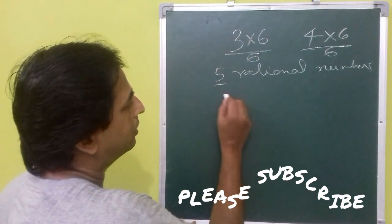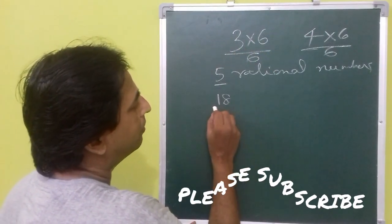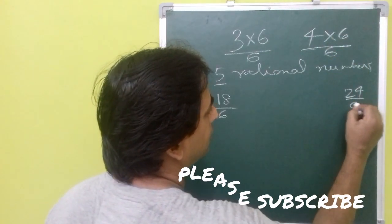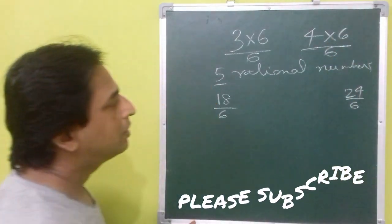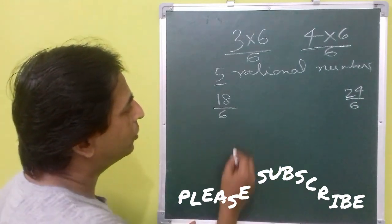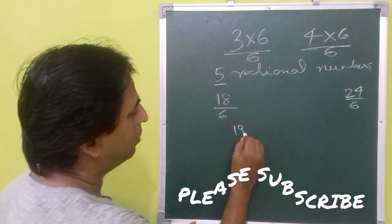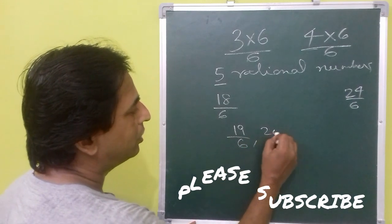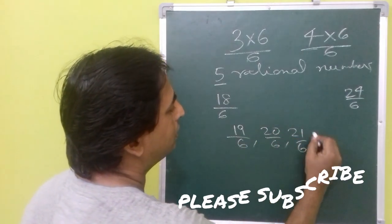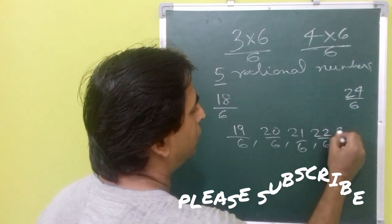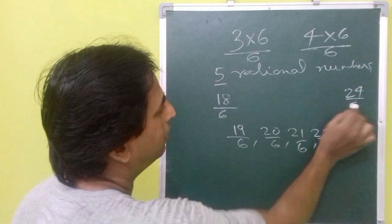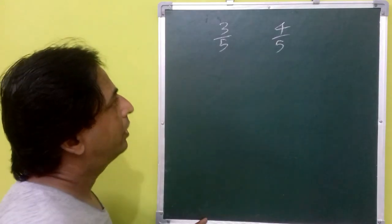So here you get three times six is 18/6, and four times six is 24/6. Between 18/6 and 24/6 you can find five rational numbers: 19/6, 20/6, 21/6, 22/6, and 23/6.